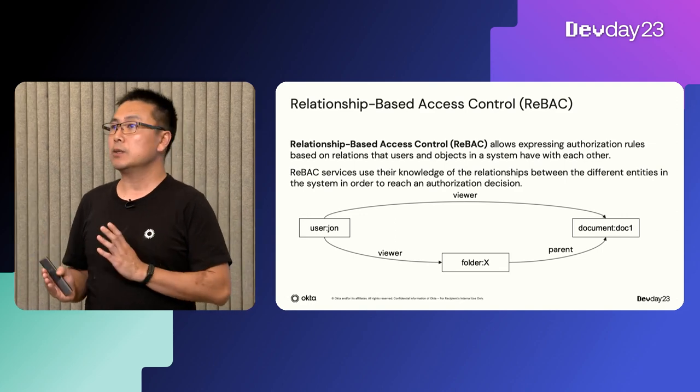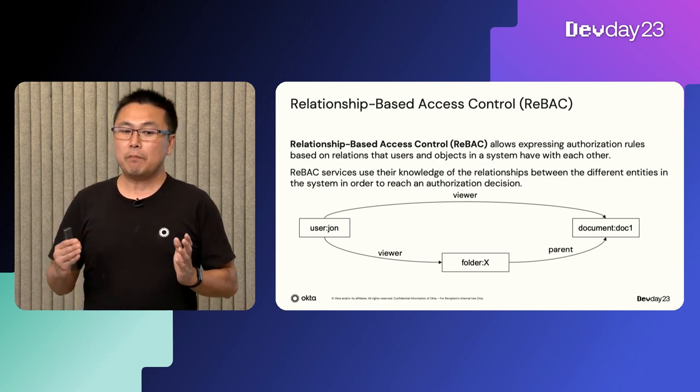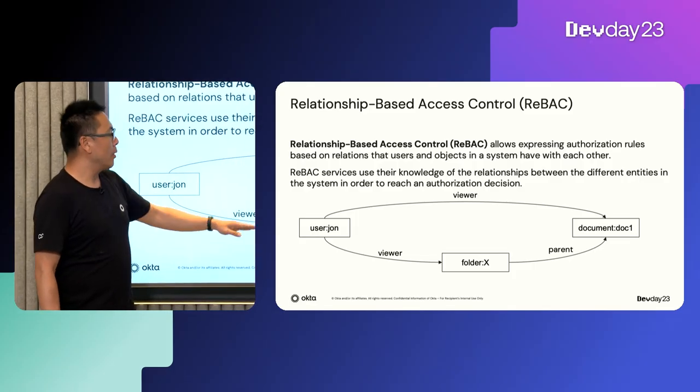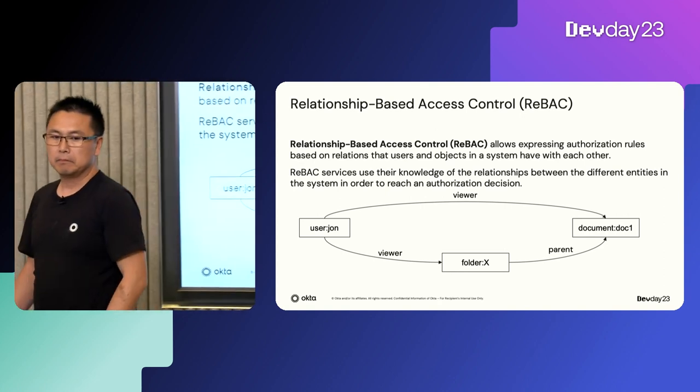This leads us to relationship-based access control, or ReBAC. ReBAC allows you to express authorization rules based on the relations that users and objects in the system have with each other. The ReBAC service uses knowledge of relationships between different entities to reach an authorization decision. For example, user John can access document 1 if he has a viewer relationship with the document, or if he has a viewer relationship with folder X and folder X has a parent relationship with document 1.